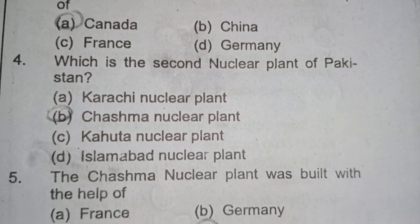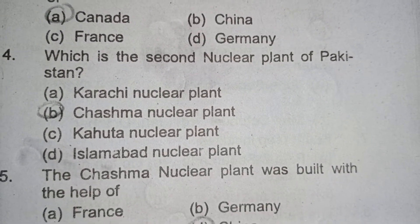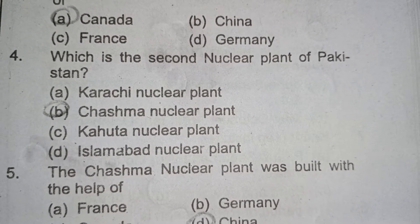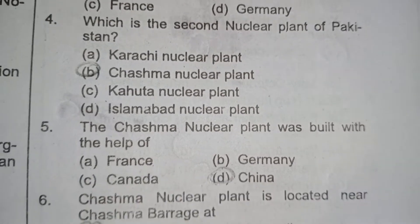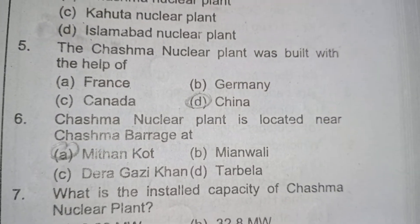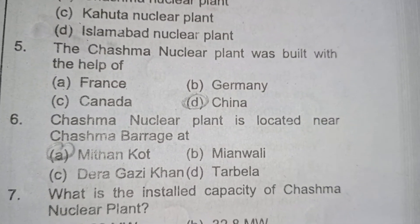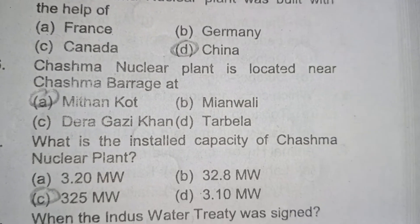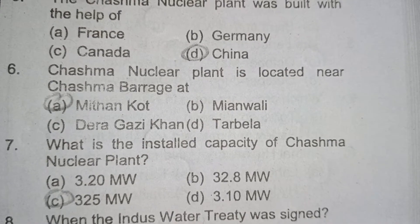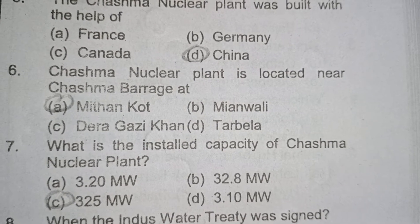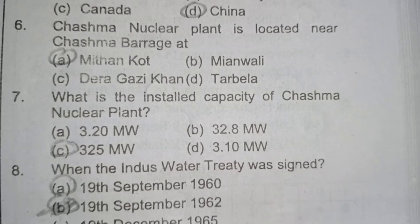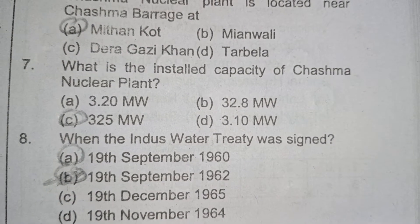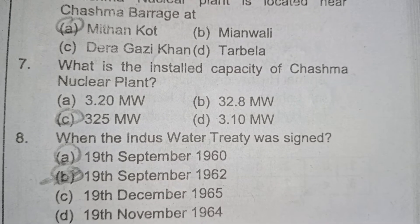Which is the second nuclear power plant of Pakistan? Option B is correct: Chashma Nuclear Plant. The fifth question: the Chashma Nuclear Plant was built with the help of China. The Chashma Nuclear Plant is located near Chashma Barrage. The seventh question: what is the installed capacity of Chashma Nuclear Plant?